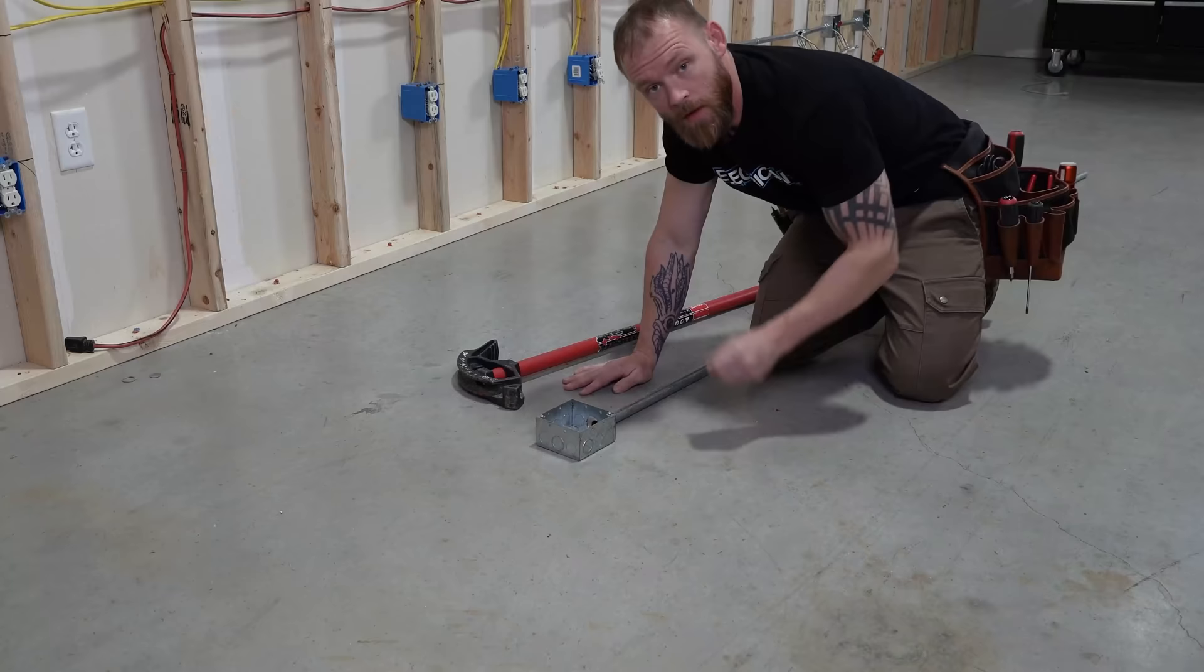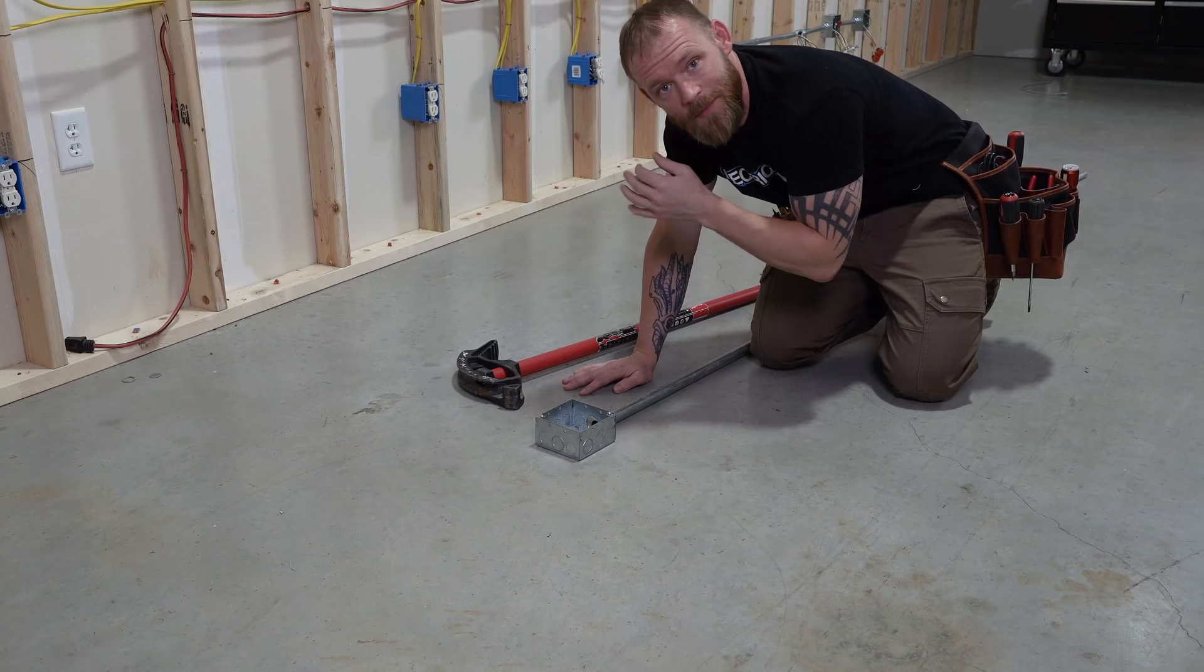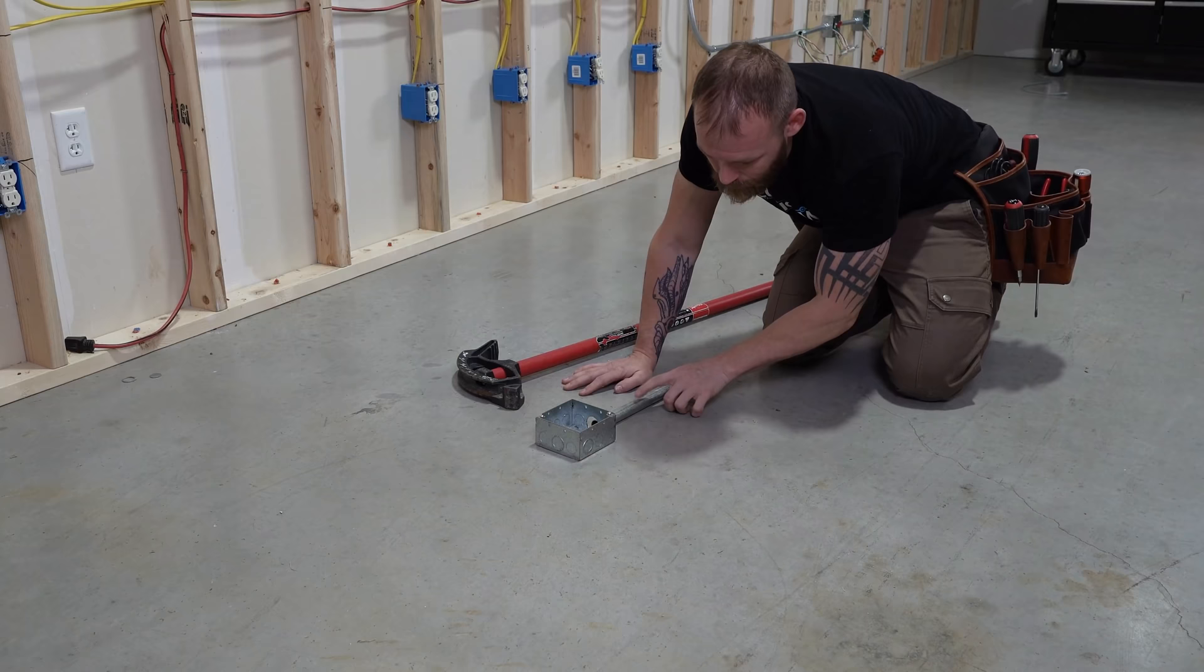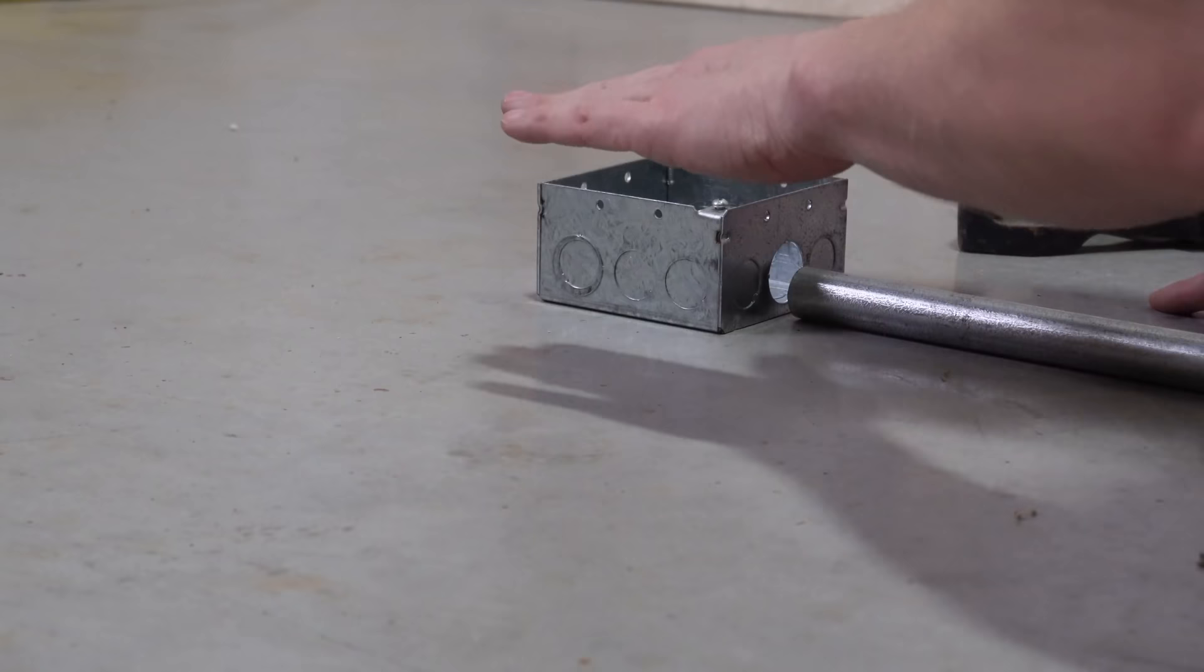All right, so out in the field every once in a while we run across something we have to do called a box offset. A box offset is essentially bending a piece of conduit in a way, kind of making an S-curve on it, to get into something that is raised.